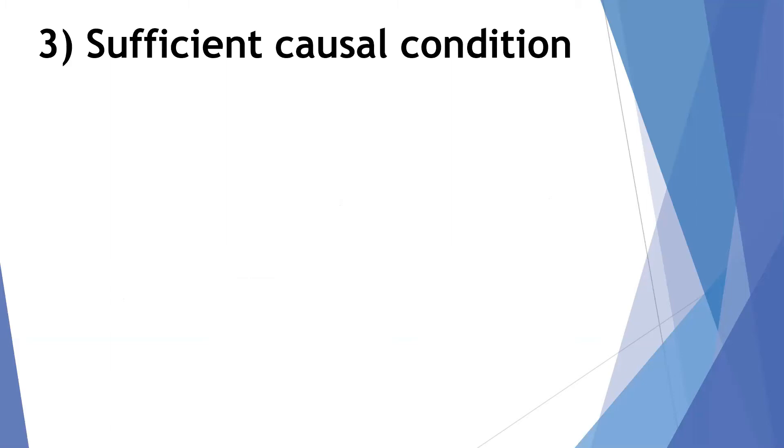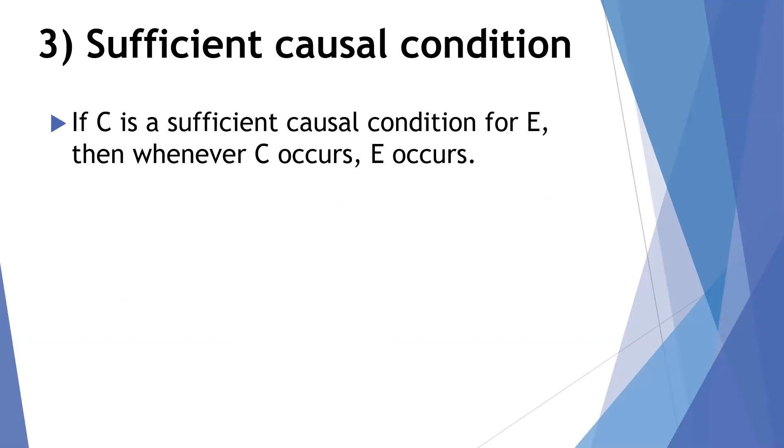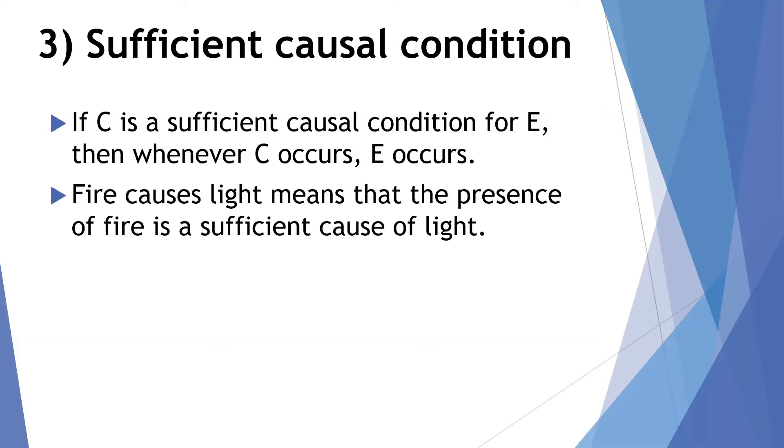Sufficient causal conditions may be described by the form, if C is a sufficient condition for E, a causal condition for E, then whenever C occurs, E occurs. When we have the cause, the effect will be there. So fire causes light. When you have the flame, when you have the fire, the presence of fire, that's a sufficient cause of light. The effect will follow.